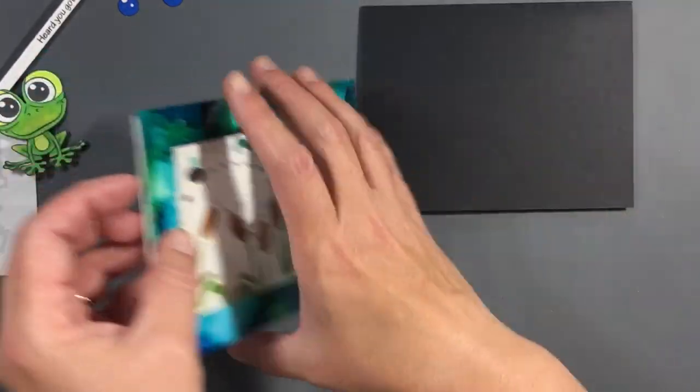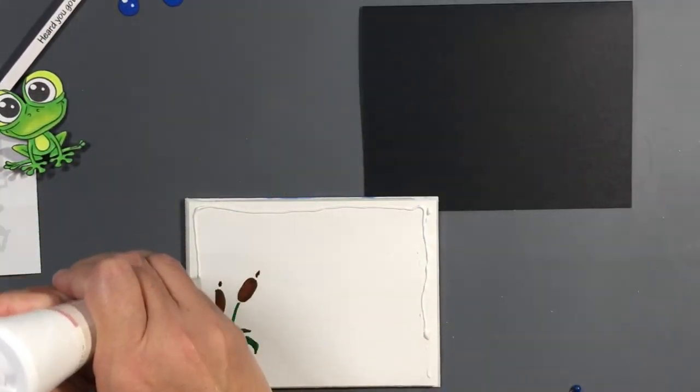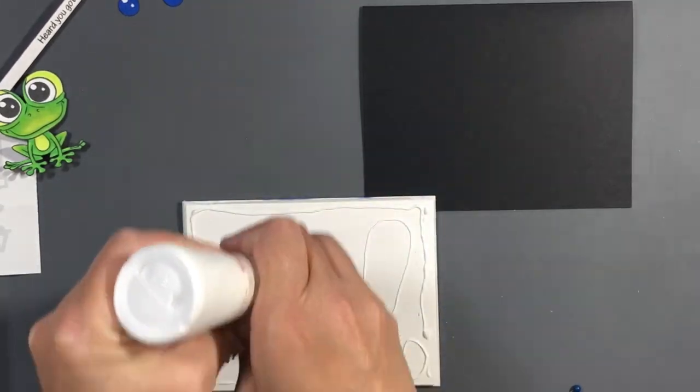Now I'm going to use some VersaFine Clair Nocturne ink and stamp out my sentiment. I have 'heard you got a bug' and I think I heat embossed that as well.